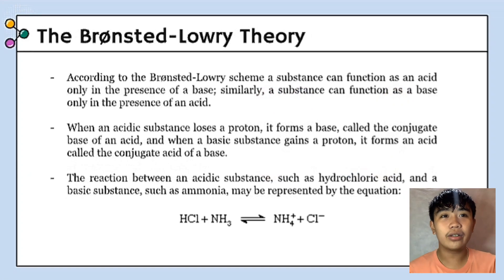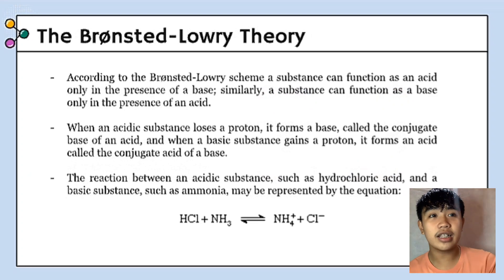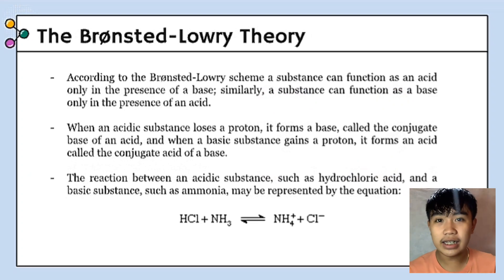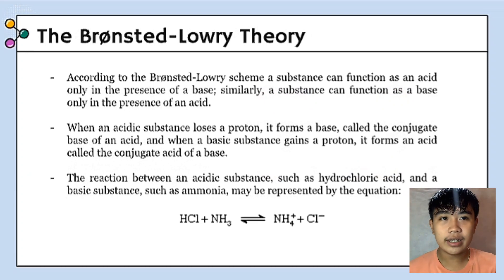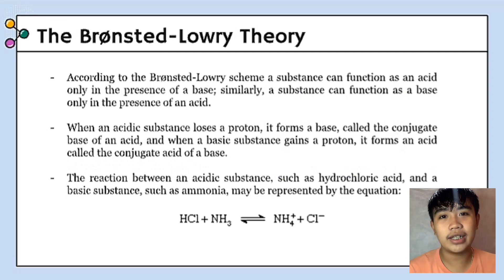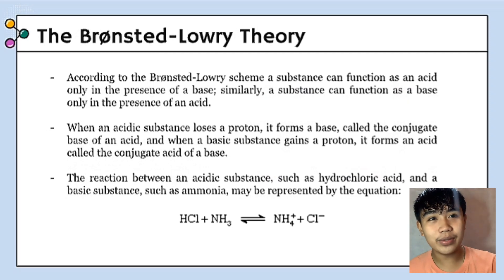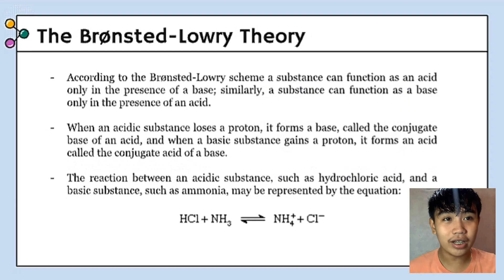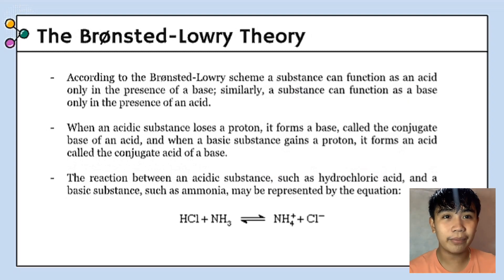According to the Bronsted-Lowery scheme, a substance can function as an acid only in the presence of a base. Similarly, a substance can function as a base only in the presence of an acid. When an acidic substance loses a proton, it forms a base called the conjugate base of an acid.